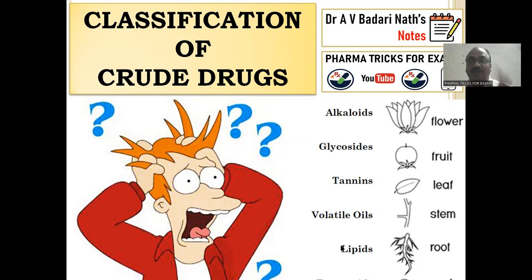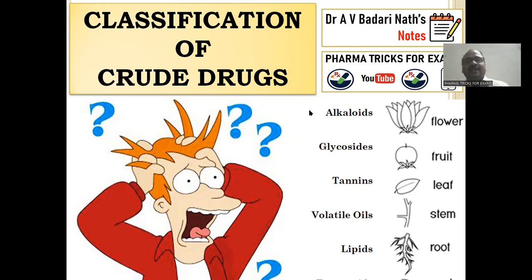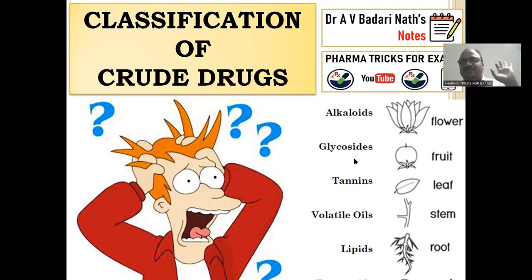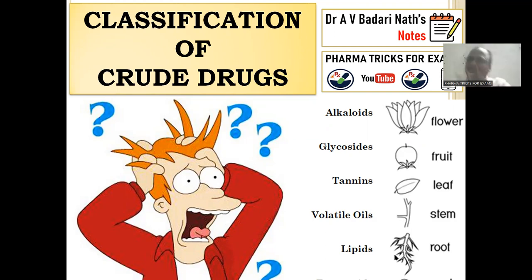Alkaloids and all these phytochemicals are parts of the plant. There are a number of parts, a number of alkaloids, and a number of phytochemicals. Ideally, all flowers would consist of alkaloids, all fruits of glycosides, all leaves only tannins, stems only volatile oils, roots only lipids, and seeds only terpenoids — nicely classified.